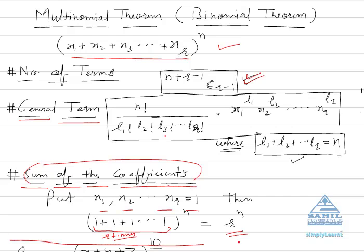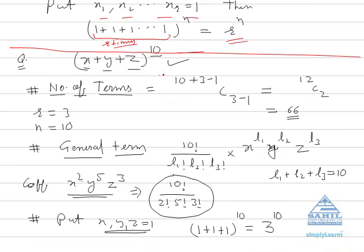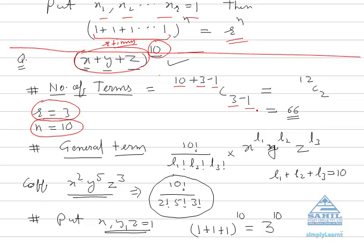Let me give you an example. The question is x plus y plus z whole raised to power 10. The first question is the number of terms. The number of variables r is 3 and n is 10. Using the formula n plus r minus 1, C r minus 1, that is 12 C 2, which equals 66. You can imagine how many terms there are — you cannot find this just by expanding, as that would be a very lengthy process.